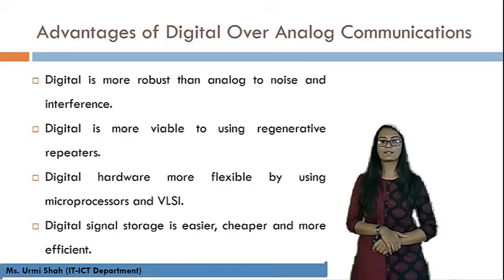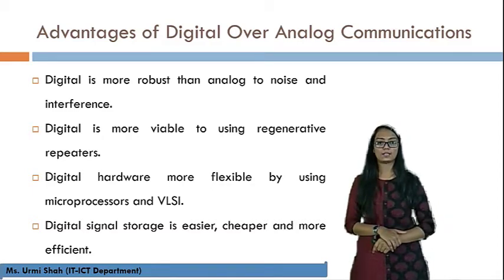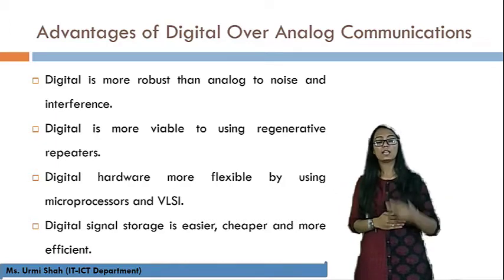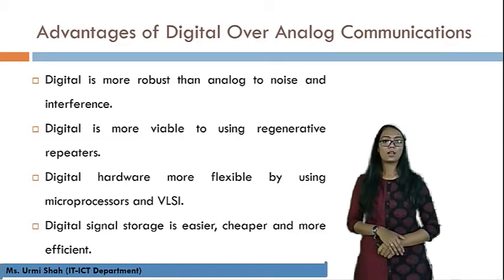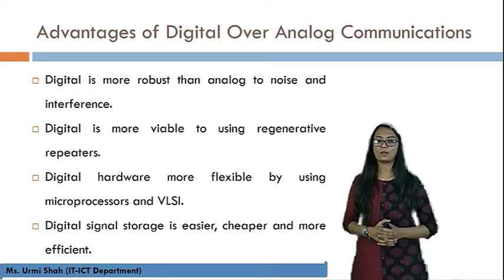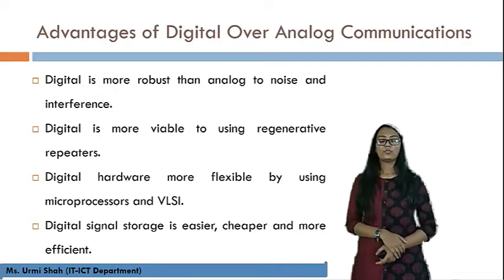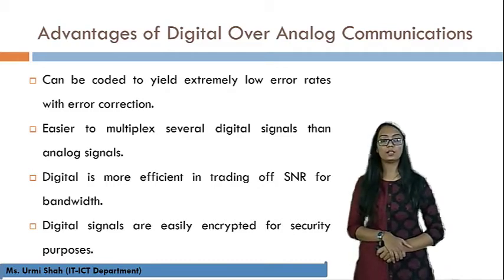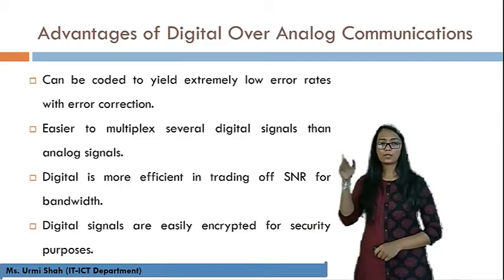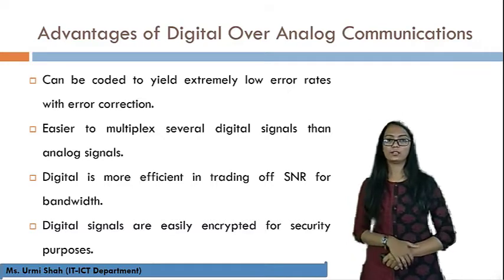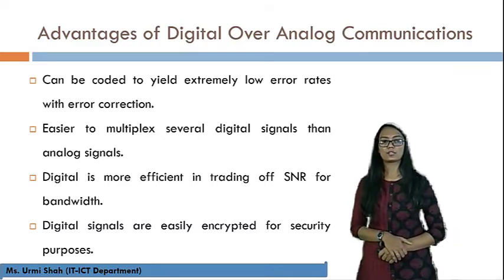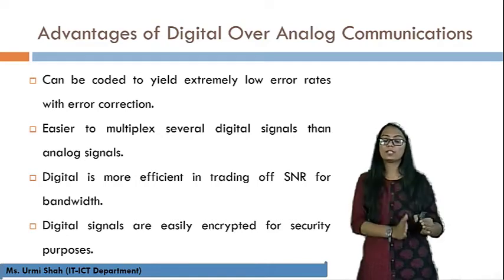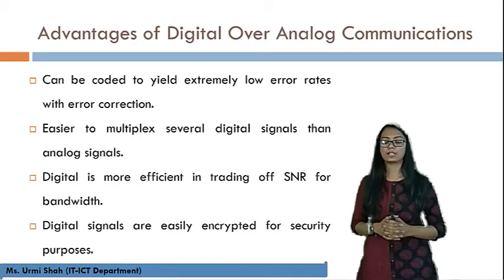Digital Hardware is more flexible by using microprocessors and VLSI, so it is more flexible towards recent hardware technology. Digital Signal Storage is easier, cheaper, and more efficient — anything cost-effective is best selling in the market. Digital Communication can also be coded to achieve extremely low error rates with error correction. Additionally, it is easier to multiplex several digital signals than analog signals — at one time we can send multiple signals in digital form, whereas in analog there are some limitations.